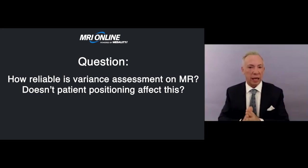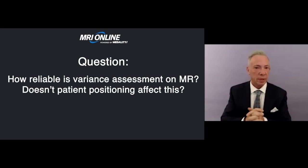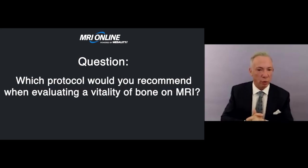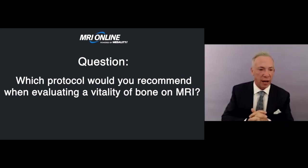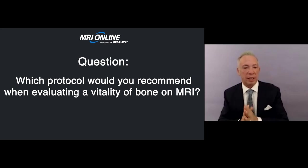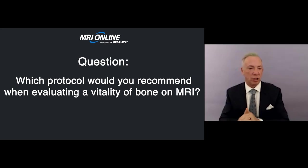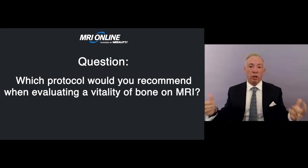I absolutely use the secondary signs to put myself on sound footing when dealing with hand surgeons who have very strict criteria for variance. Regarding which protocol to recommend when evaluating vitality of bone on MRI — for instance in Kienböck's disease or scaphoid fracture — is T1 fat-sat before and after contrast sufficient, or do you need perfusion sequences?